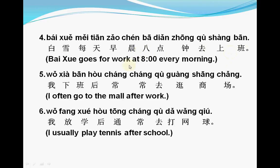The next sentence: 白雪每天早上八点钟去上班。 白雪 is a name, 每天 means 'every day', 早上 means 'morning', 八点钟 means 'eight o'clock', 去 means 'go', 上班 means 'work'. So: Bai Xue goes to work at eight o'clock every morning.